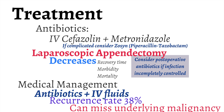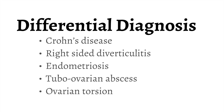The last point I would like to make is to keep an open mind about what is causing symptoms that may mimic appendicitis. Other diagnoses that should be entertained include Crohn's disease, right-sided diverticulitis, endometriosis, tubo-ovarian abscess, and ovarian torsion, to name a few. It is always important to keep a broad differential in mind and use the history, physical, labs, and imaging to come to a reasonable diagnosis.